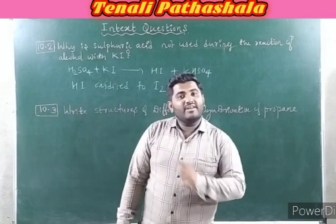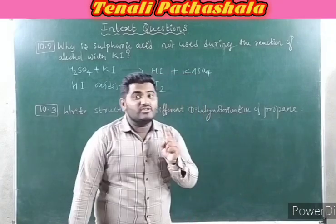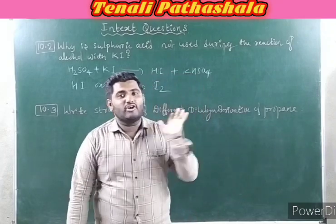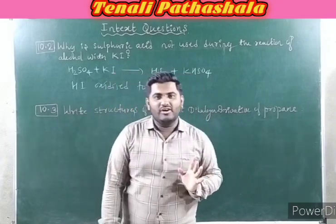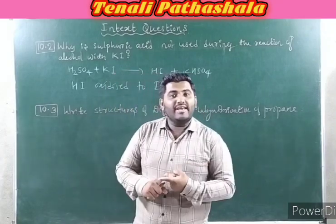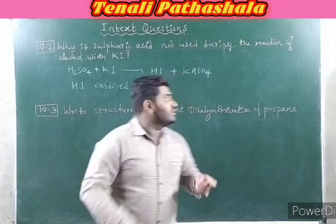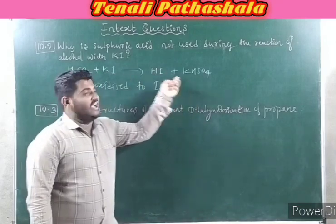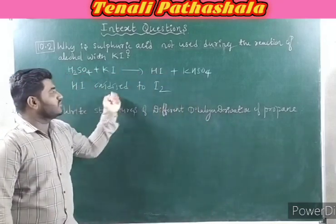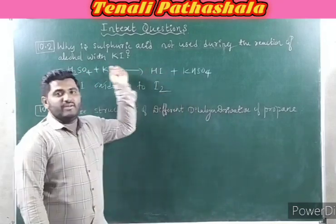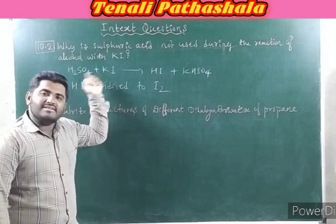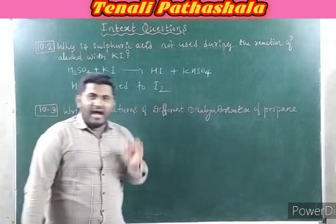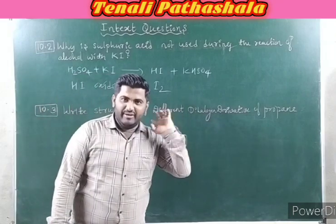Therefore, we are not supposed to use sulphuric acid during the process of preparation of alkyl iodide using KI. Whenever KI is there, sulphuric acid we are not supposed to use, because sulphuric acid converts KI into HI and HI again oxidizes into I₂ in the presence of sulphuric acid. I hope you understood the meaning.